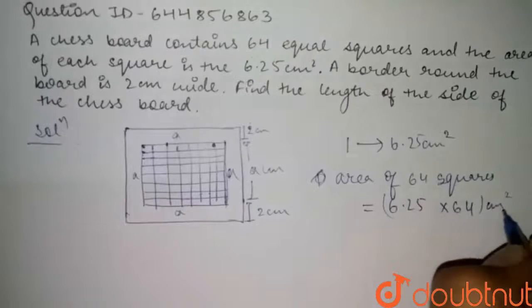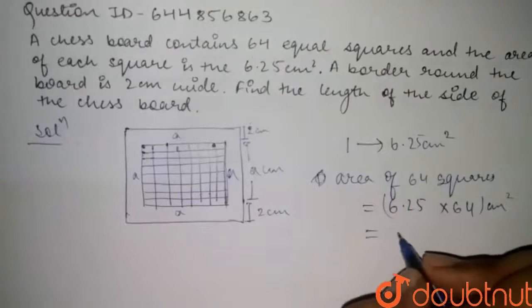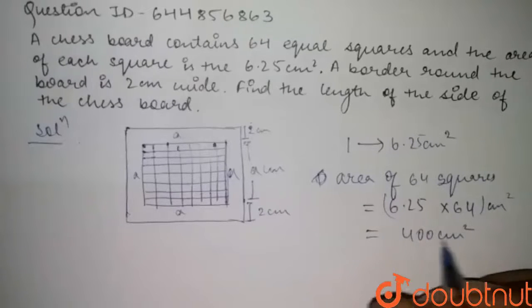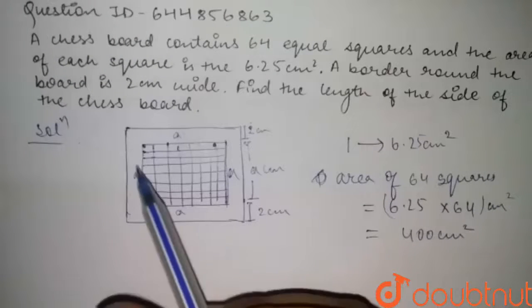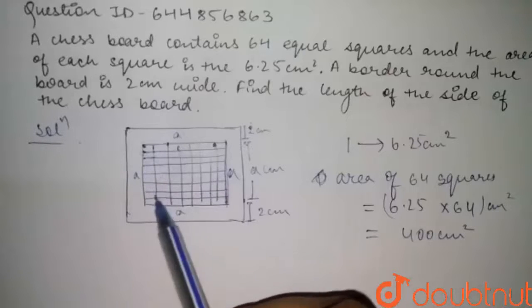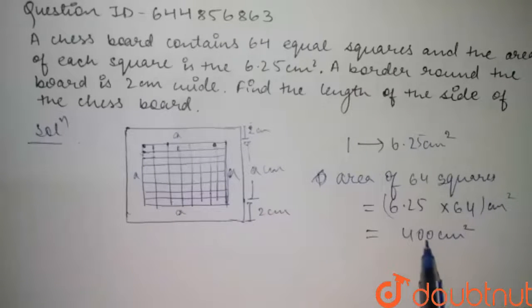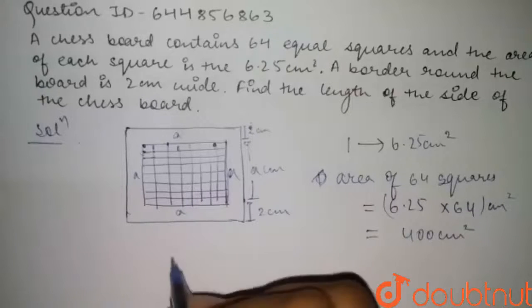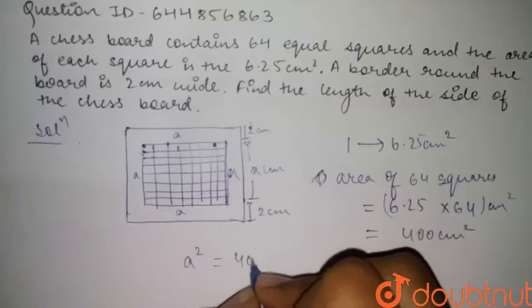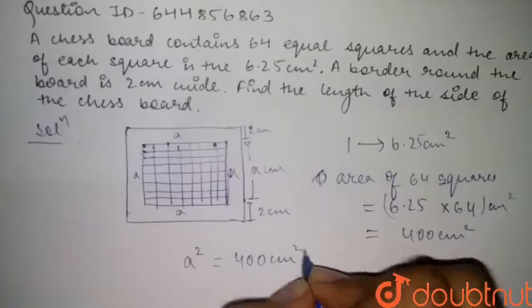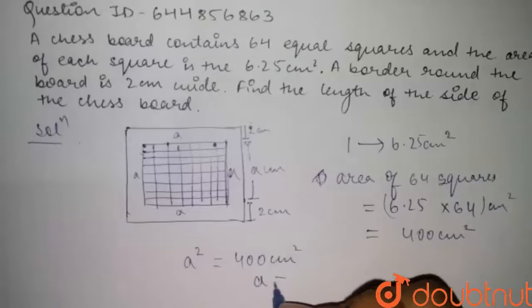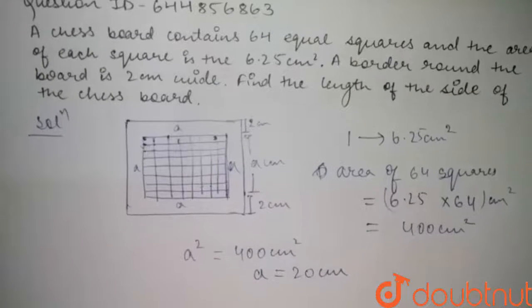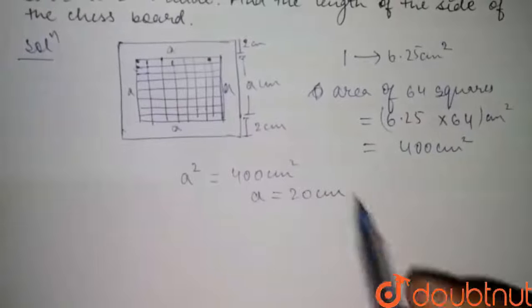This equals 400 centimeter square. This 400 centimeter square is the area of the inner chess board region. Since it's a square of side 'a', we can write a² = 400 centimeter square, therefore a = 20 centimeters.